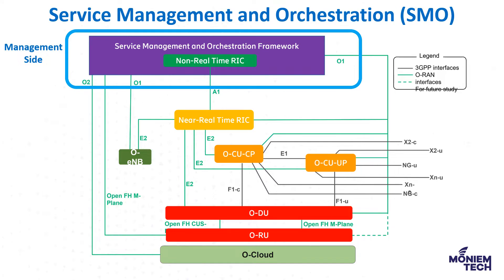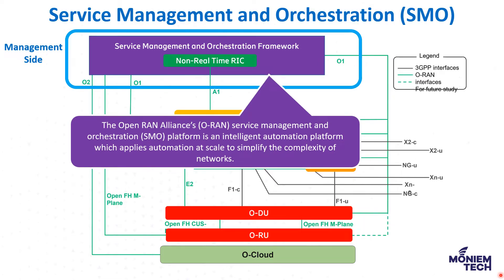The O-RAN Alliance's SMO, or Service Management and Orchestration platform, is an intelligent automation platform which applies automation at scale to simplify network complexity, improve network performance, enhance customer experience, and minimize RAN operational cost. It has two main functions: management function, and automation and orchestration function. We can say the SMO is a component that oversees all orchestration, management, and automation aspects of the RAN elements.